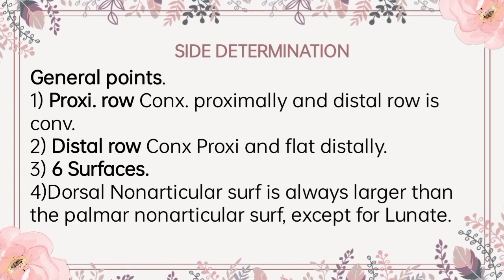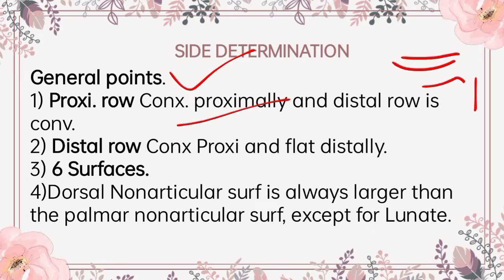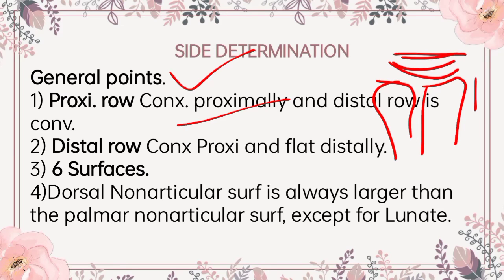Moving further to side determination, we will first see the general points. The proximal row of the carpals is convex. Here we have radius and here we have ulnar. The proximal row is convex proximally and concave distally — as you can see, there is a horizontal C. The proximal row is concave distally.